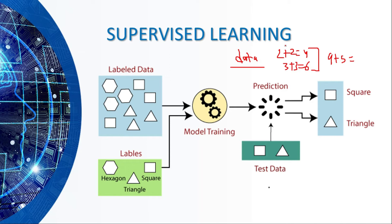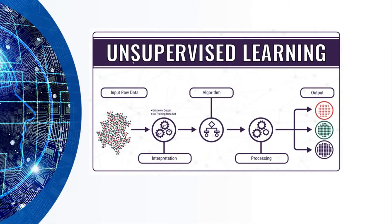Supervised learning is a model where a teacher or supervisor is required. It's a training set, and based on that training set the system learns and generates a concept to classify patterns and objects. For example, you can see labels such as hexagon, triangle, and square. These are labeled data. You input many rectangles, hexagons, and so on; when you train the model, it can predict through testing and give you output on whether a shape is a square or a triangle. This is called tutoring.